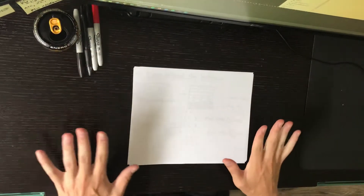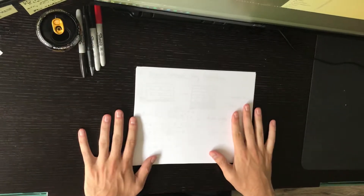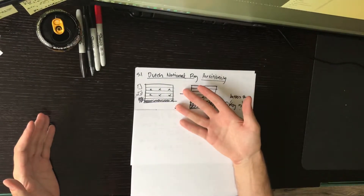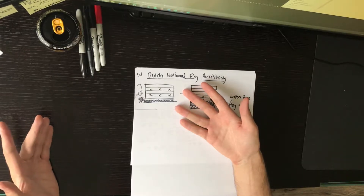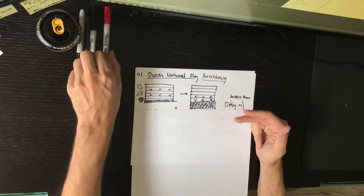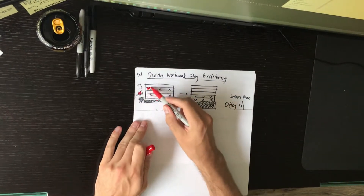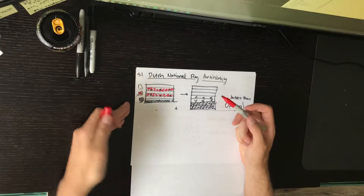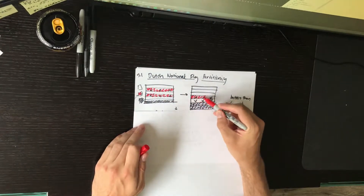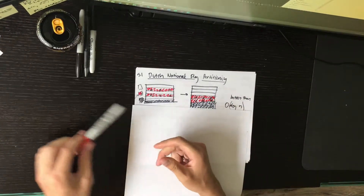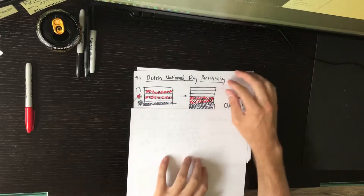This first episode is on something called Dutch national flag partitioning. Basically, given a flag with certain colors, to partition it correctly would be to essentially sort it. In this example it comes out unsorted, and say this was the ordering you would want — white, red, black — you'd want to order it like so. Though this real-world example is a bit hard to think about.